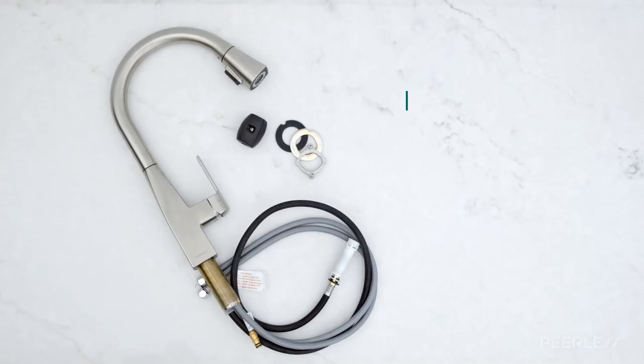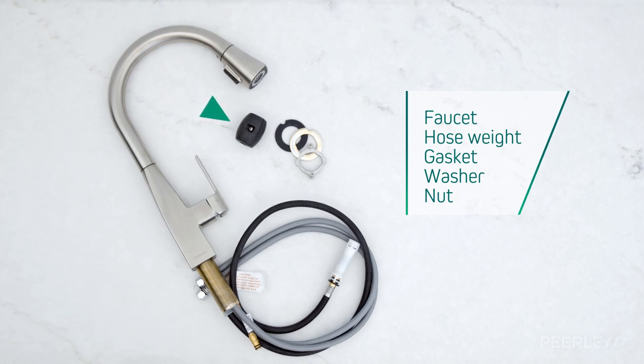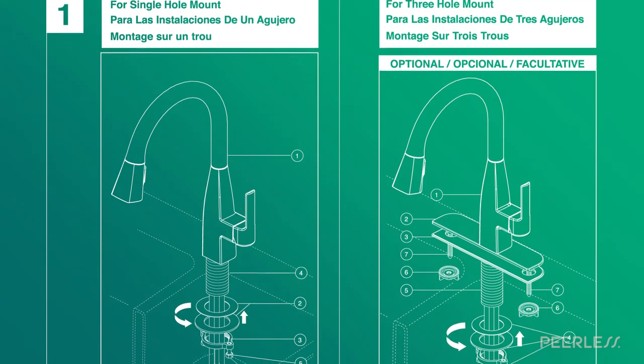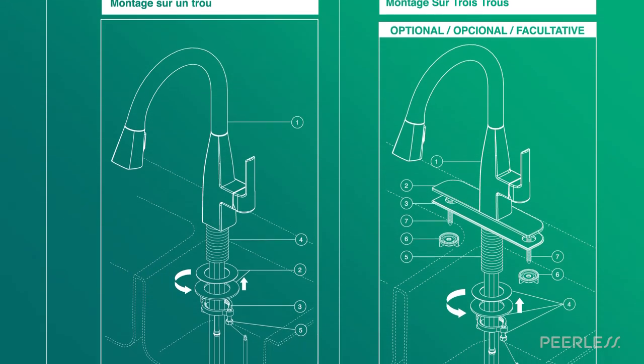In the box, you will find the faucet, hose weight, and the gasket, washer, and nut. Be sure to also read all of the printed instructions found in the box.